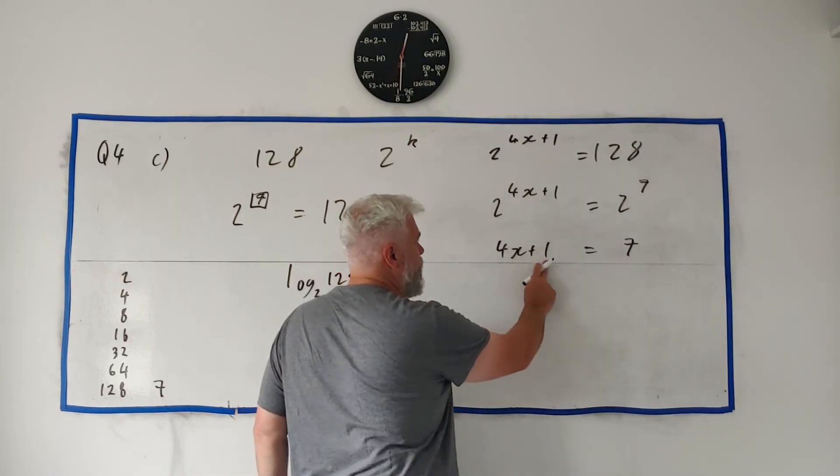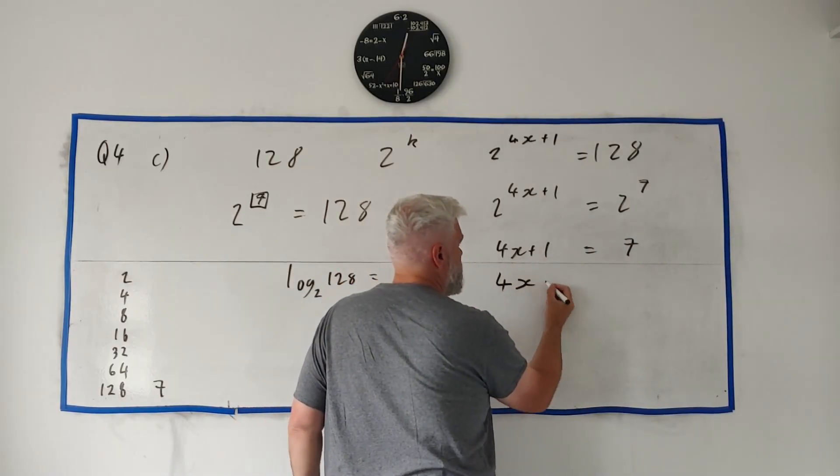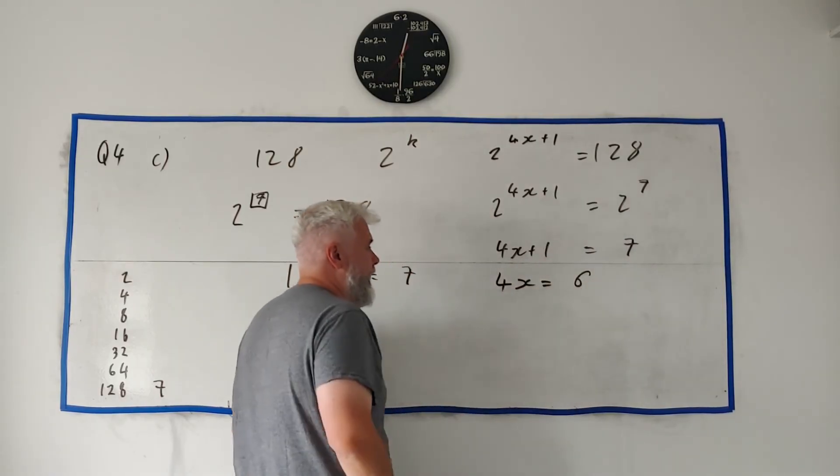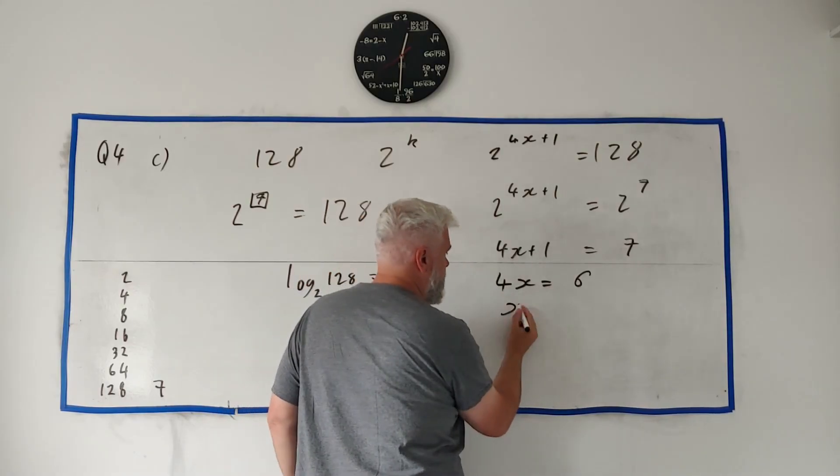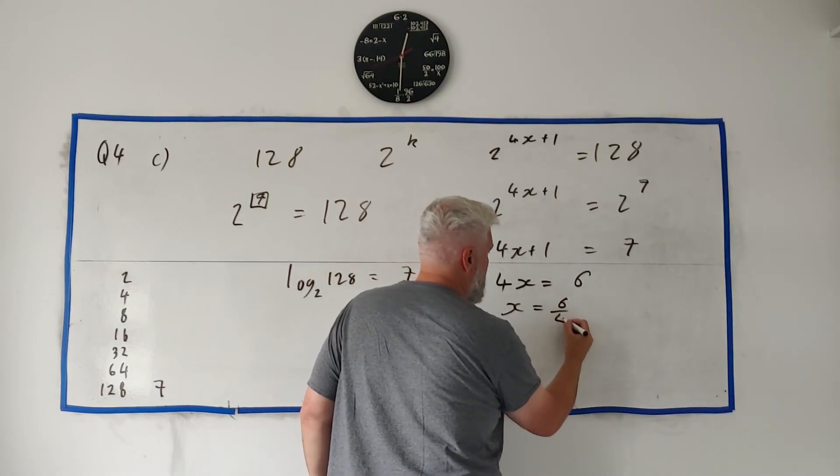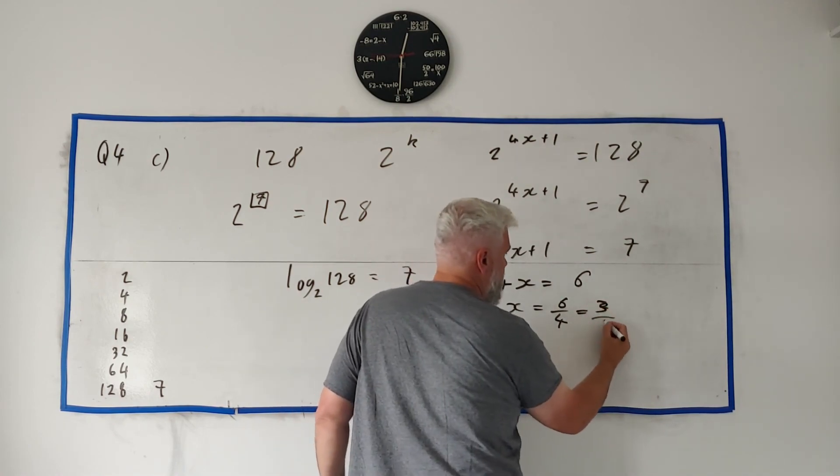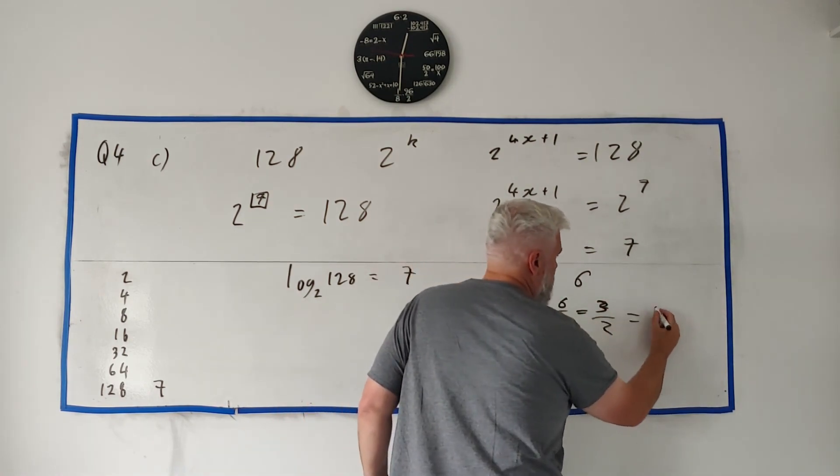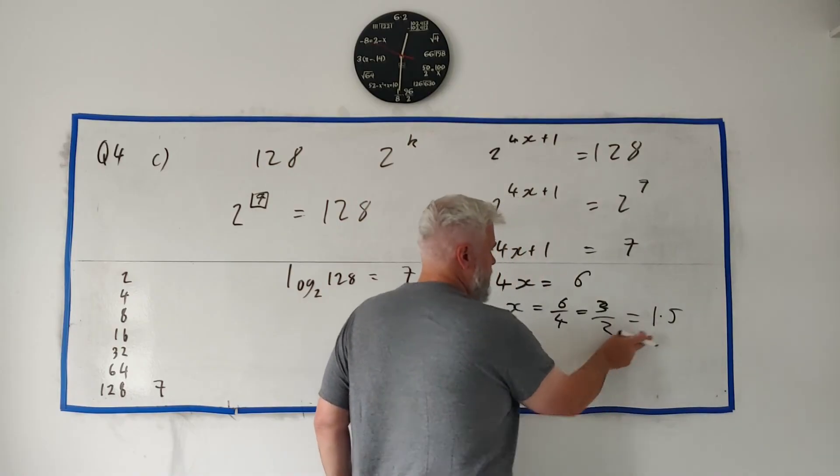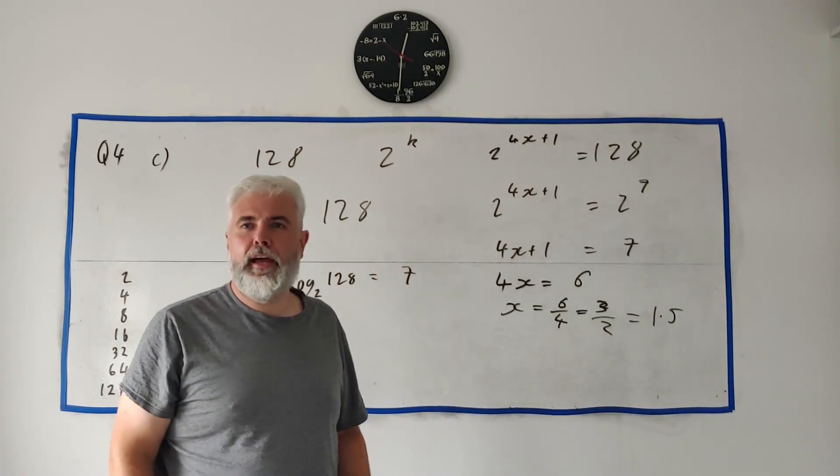Take 1 from both sides, 4x equals 6, and divide both sides by 4, x equals 6 over 4, or that equals 3 over 2, or 1.5. Either of these two is full marks for that question.